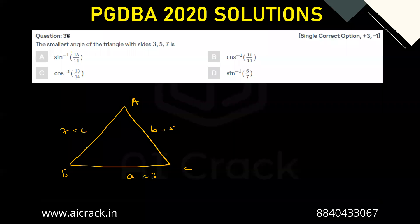And we have to find out the smallest angle of the triangle. So we know that with the help of property, the smallest angle is opposite to the smallest side. So let's say this is our theta. The smallest side over here is 3, so that is why this angle should be the smallest.